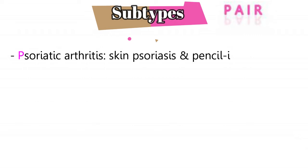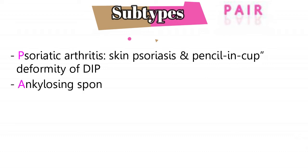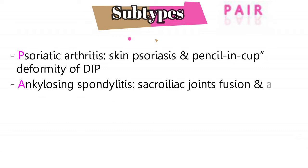There are four diseases that make up seronegative spondyloarthritis. To remember them, think of the word PAIR. P is for psoriatic arthritis — basically skin psoriasis, which is thickening of the skin with scales, and pencil-in-cup deformity of the distal interphalangeal joints. A is for ankylosing spondylitis, which is basically sacroiliac joint fusion and aortic regurgitation.